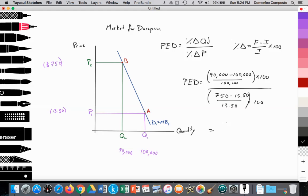you'll see that here there's a negative 10% decrease, and that's going to be divided by a 5,455.56% increase in price,